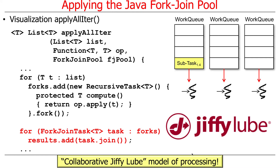That's kind of what happens when join is called. When join is called, the worker thread that calls join doesn't just stand there — like we do at Jiffy Lube — waiting for everybody else to do the work. The worker thread that calls join is going to pitch in. It's going to go ahead and also run some of the tasks. In fact, it can run tasks, steal tasks, and do all kinds of other stuff. The idea behind the fork-join pool is that everybody pitches in.